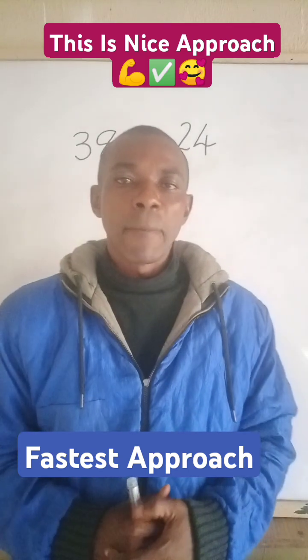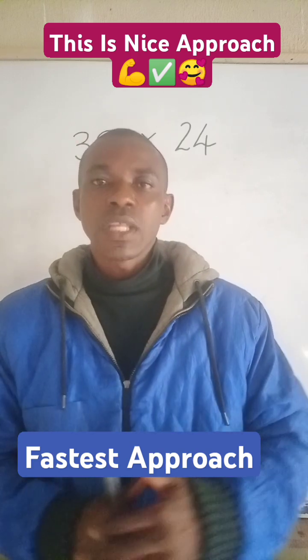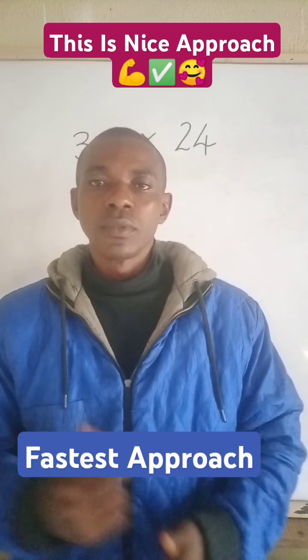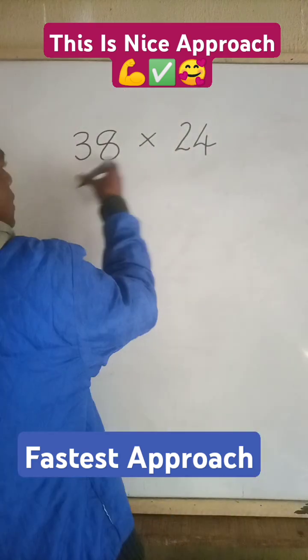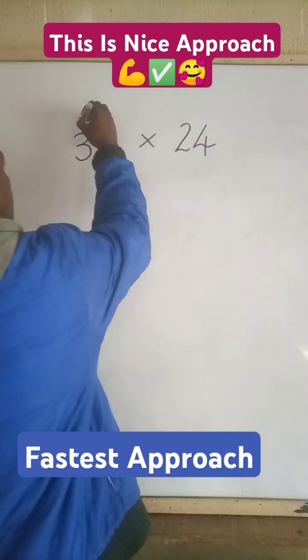We are going to practice that with the question that we have on the board. Let's go: 38 multiplied by 24. To solve this is very simple. What I will do is this: